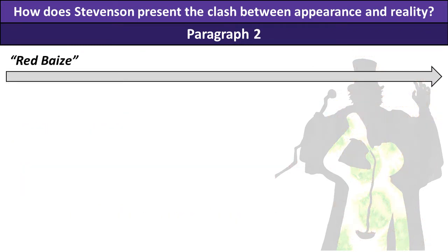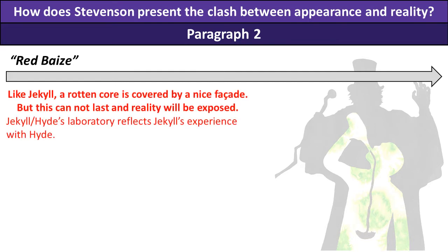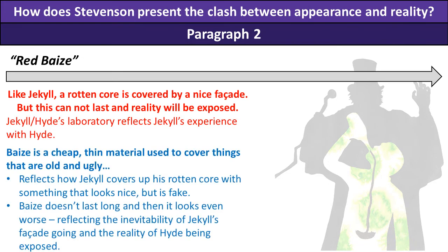My favourite quote here is 'red baize.' This metaphor describes how Jekyll is covering up his rotten core with a nice facade. Baize is a cheap, thin material used to cover things that are old and ugly. It reflects how Jekyll covers up his rotten core with something that looks nice but is fake. Baize doesn't last long and then it looks even worse — reflecting the inevitability of Jekyll's facade falling away and the reality of Hyde being exposed.